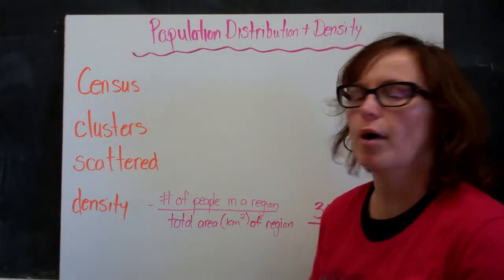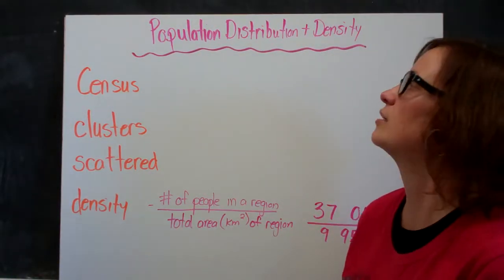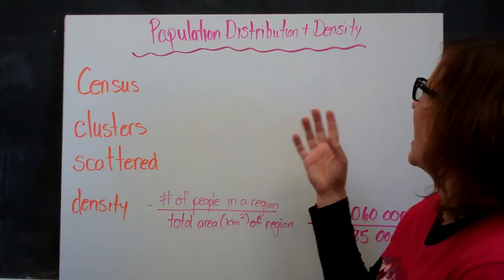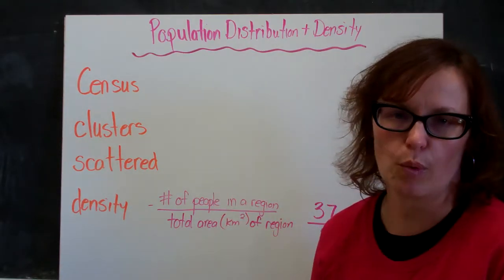For this video we're going to be talking about population distribution and density. Population distribution is where people live and density is how many people live where.